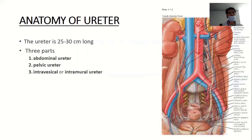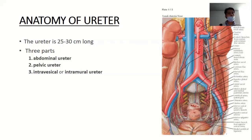Ureters are the paired fibromuscular tubes that convey urine from the kidneys in the abdomen to the urinary bladder in the pelvis. Every ureter length is 25 to 30 cm. Anatomically it is divided into three parts. The abdominal ureter extends from the renal pelvis running in front of the transverse processes of L2 to L5 along the medial border of the psoas muscle up to the bifurcation of the common iliac vessels.